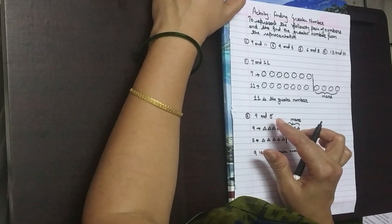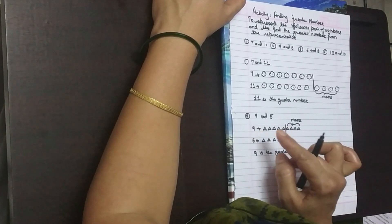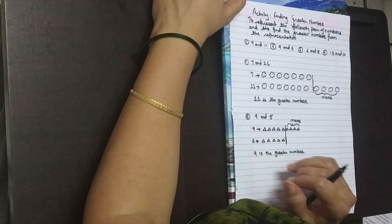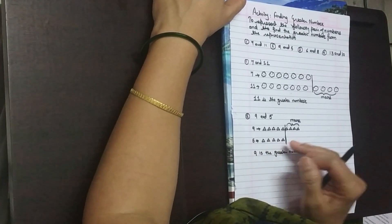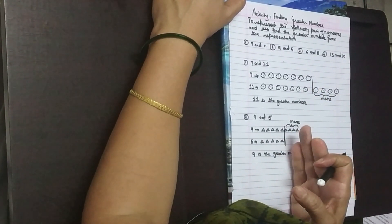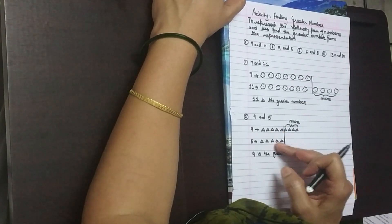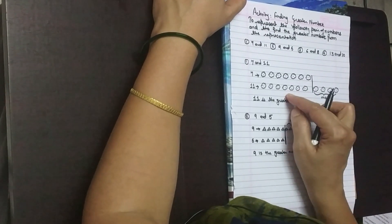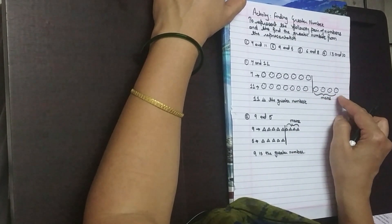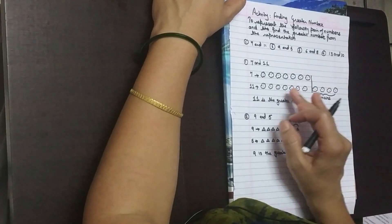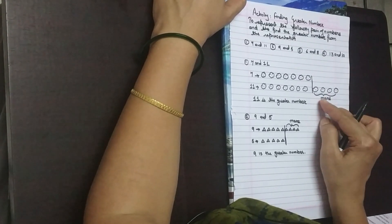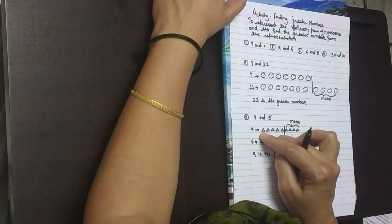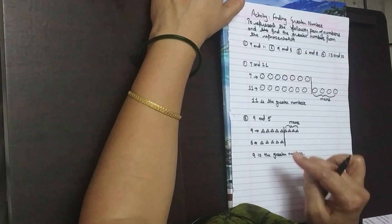Out of both numbers, we represent them using any shape. Here 9 is the first number, so I used 9 triangles. The second number is 5, so I used 5 triangles. Then compare the representations and draw the line for the same number of shapes. Here 5 and 5 are the same, so I drew a line at 5 and separated the more shapes — more triangles. In the first representation more triangles are there, that is why the first number is greater. So 9 is the greater number.